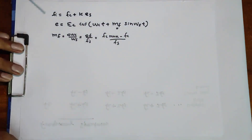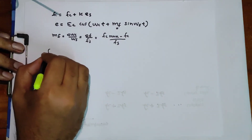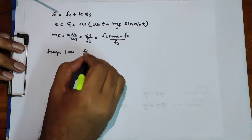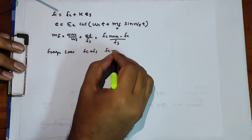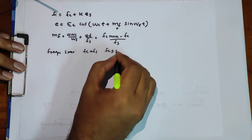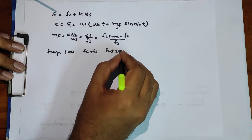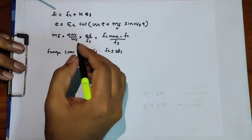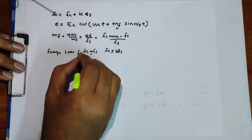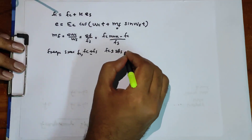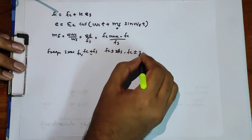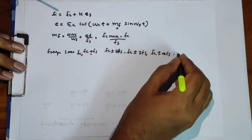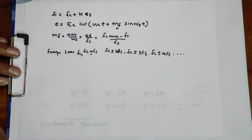Now we have the frequency spectrum. The frequency components are: carrier frequency Fc, then Fc plus or minus Fs, Fc plus or minus 2Fs, Fc plus or minus 3Fs, Fc plus or minus 4Fs, and so on. These are the frequency spectrum components of the FM wave.